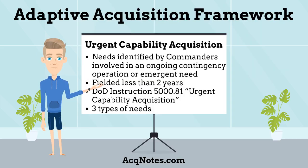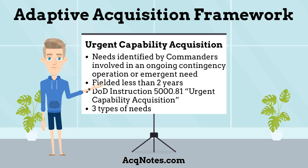The first Adaptive Acquisition Pathway is Urgent Capability Acquisition. The purpose of Urgent Capability Acquisition is to fulfill urgent existing and/or emerging operational needs or quick reactions in less than two years. These needs are the most urgent and the highest priority for the DOD. The main guidance is DOD Instruction 5000.81, Urgent Capability Acquisition.